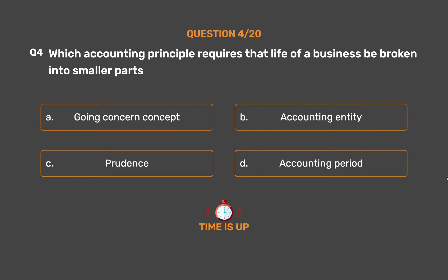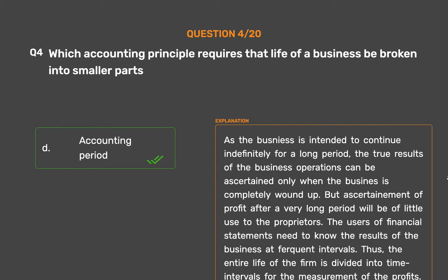The correct answer is Option D: Accounting Period. As the business is intended to continue indefinitely for a long period, the true results of business operations can be ascertained only when the business is completely wound up. But ascertainment of profit after a very long period will be of little use to the proprietors. The users of financial statements need to know the results at frequent intervals.